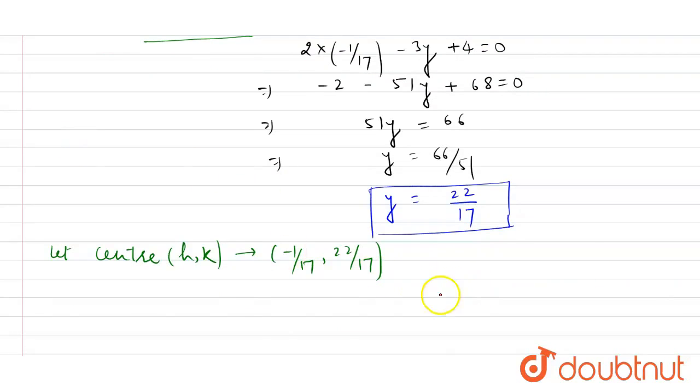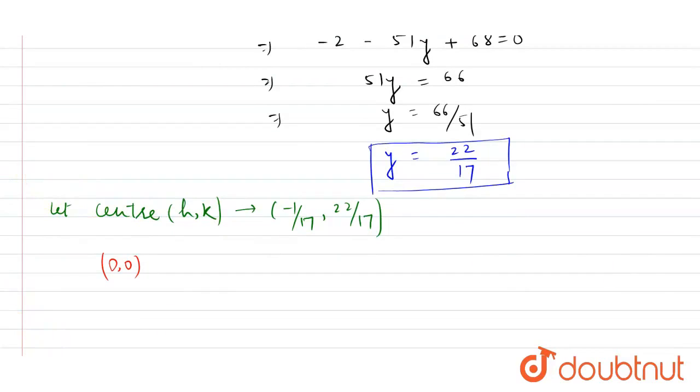Now students, as you know, our circle passes through a point that is origin. And students, as you can understand, in a circle, let me show you first. Suppose this is a circle.